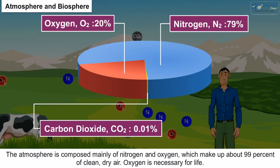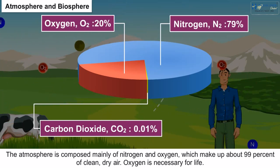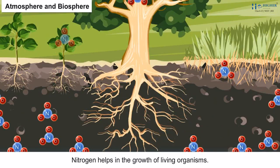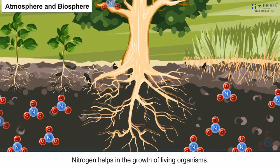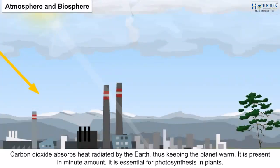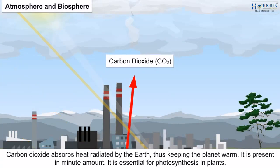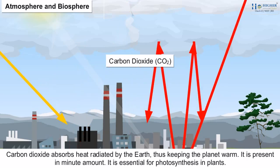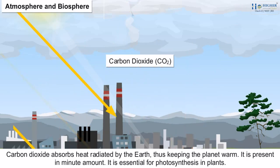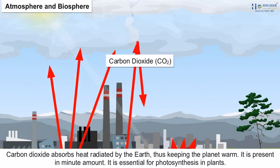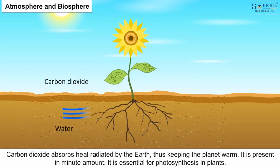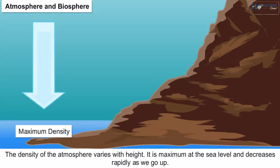The atmosphere is composed mainly of nitrogen and oxygen, which make up about 99% of clean and dry air. Oxygen is necessary for life, and nitrogen helps in the growth of living organisms. Carbon dioxide absorbs heat radiated by the Earth, thus keeping the planet warm. It is present in minute amounts and is essential for photosynthesis in plants.